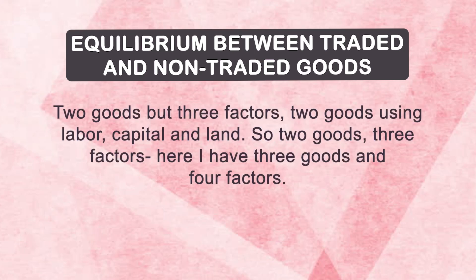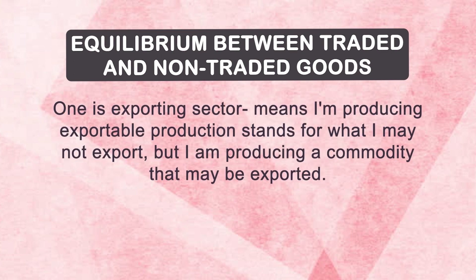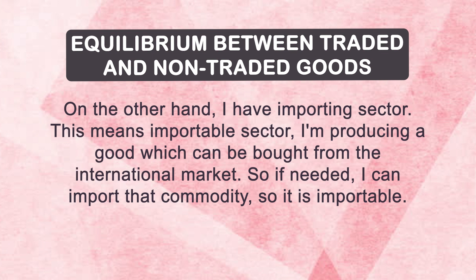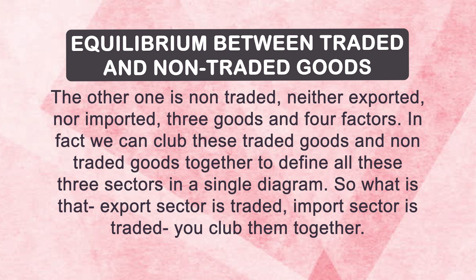In the specific factor model we had two goods and three factors — two goods using labour, capital, and land. Here we have three goods and four factors. The exporting sector produces exportables — I may not export, but I am producing a commodity that may be exported. The importing sector produces importables — a good which can be bought from the international market. The other is non-traded — neither exported nor imported. We can club the export and import sectors together as a composite traded good, and on the other axis we have the non-traded sector.